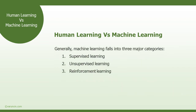Getting deeper into machine learning, we need to relate how human learning is connected with various machine learning mechanisms. Generally, machine learning falls into three major categories: the first is supervised learning, the second is unsupervised learning, and the third is reinforcement learning.